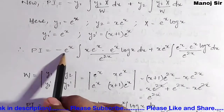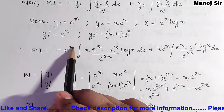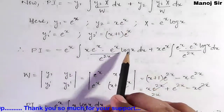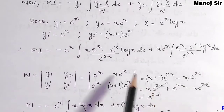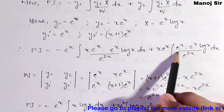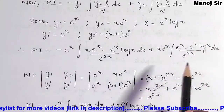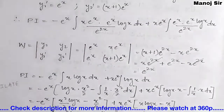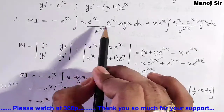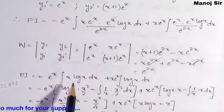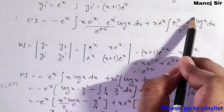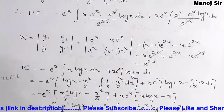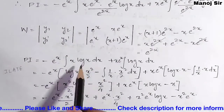Now substituting into the PI formula: PI = -e^x·∫(x·e^x·e^x·log x / e^(2x))dx + x·e^x·∫(e^x·e^x·log x / e^(2x))dx. After cancellation, this simplifies to -e^x·∫x·log x·dx + x·e^x·∫log x·dx.